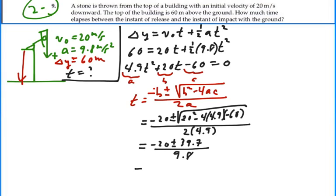We have two answers. Negative 20 minus 39.7 and negative 20 plus 39.7. If we go with the plus 39.7, we get an answer of 2.01 seconds. And if we go with the minus 39.7, we get negative 6.09 seconds.